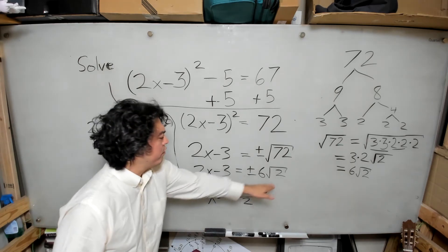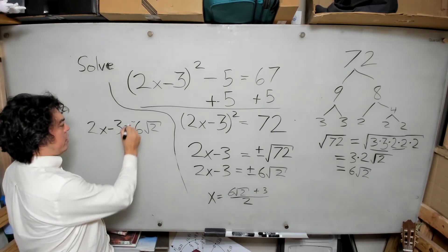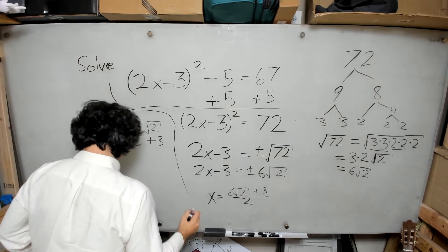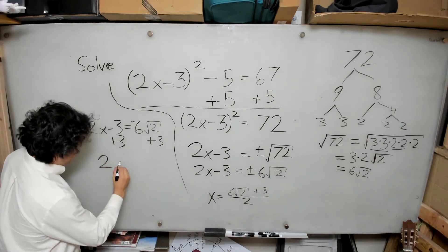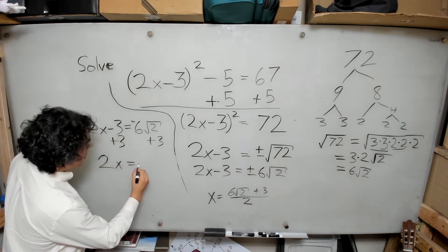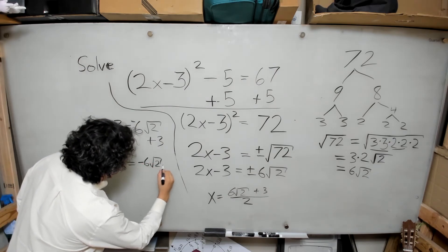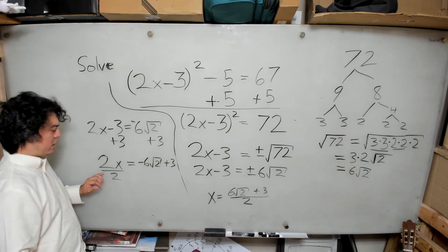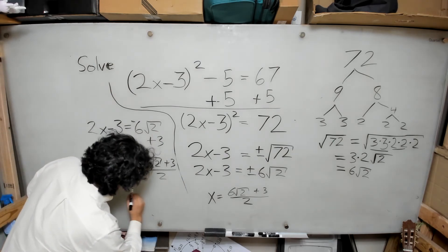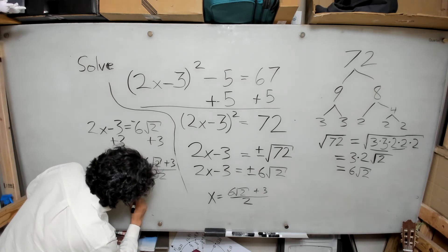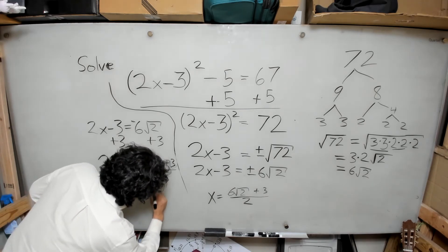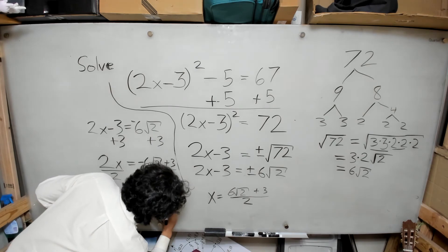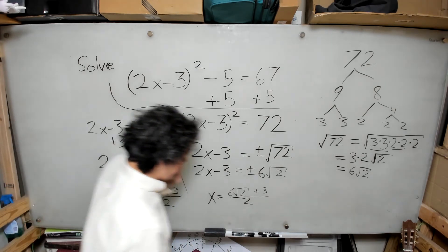Then I set the left-hand side equal to negative 6 square root of 2. Similarly, I add 3 to both sides to get 2x equals negative 6 root 2 plus 3. I divide both sides by 2 and get x equals (negative 6 root 2 plus 3) divided by 2. That's the second root.